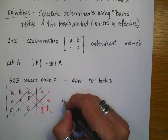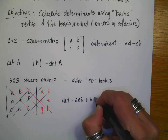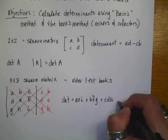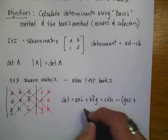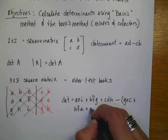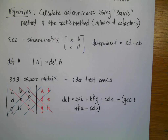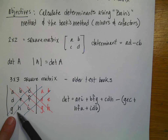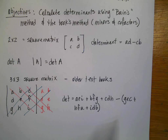The determinant is going to equal A·E·I plus B·F·G plus C·D·H, and then subtract G·E·C plus H·F·A plus I·D·B. So it's the product of the forward diagonals minus the product of the backward diagonals. You do have to remember to distribute the negative.